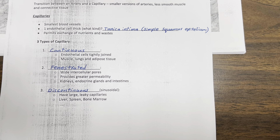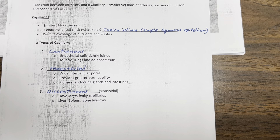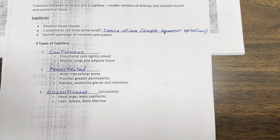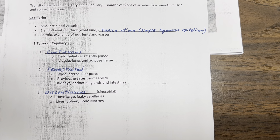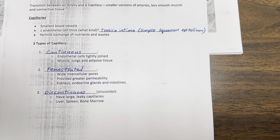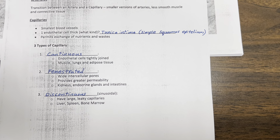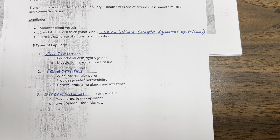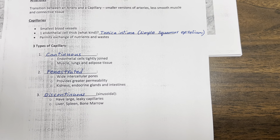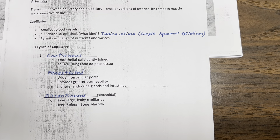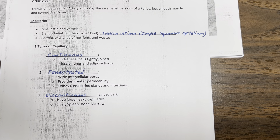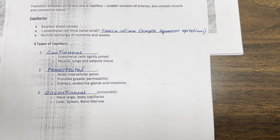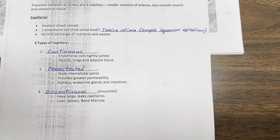Fenestrated capillaries have wide interstitial pores, which provides greater permeability. Fenestrated capillaries are found in the kidneys, endocrine glands, and intestines.